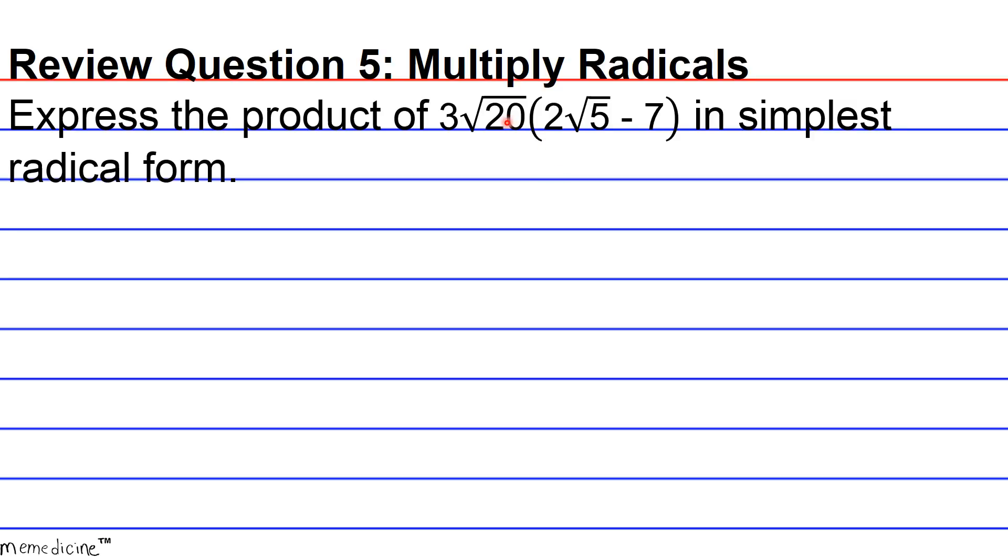Radicand is spelled R-A-D-I-C-A-N-D, and these are the terms underneath the radical symbol. Remember that when the index is not written, this automatically means we're taking the square root of a number. Let's head into the process.